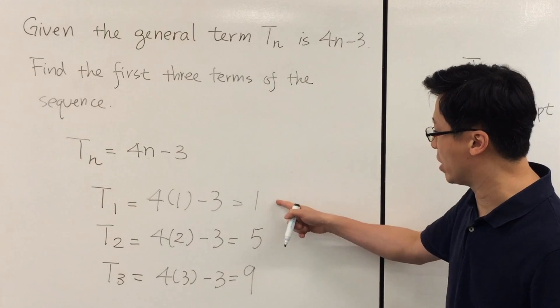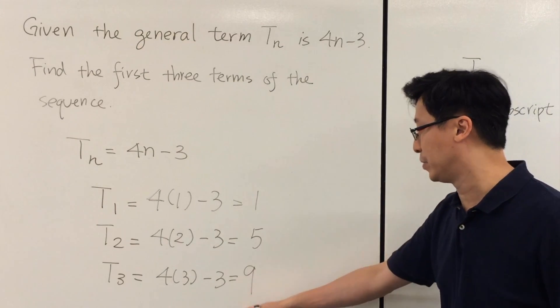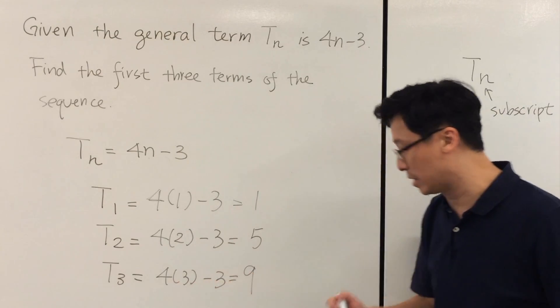So the sequence will be 1, 5, 9. And then you can actually find the remaining terms using that general term.